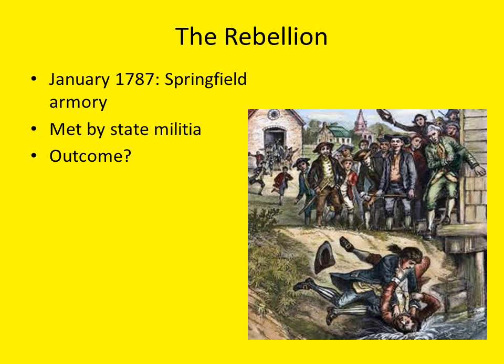In 1787, Shays and his rebel supporters went to the militia armory in Springfield to commandeer guns and ammunition. The state militia of Massachusetts met them there and defeated Shays and his followers on February 2nd of 1787. Shays himself fled to Vermont, although he was later pardoned by Massachusetts Governor John Hancock, he of the Declaration of Independence fame.